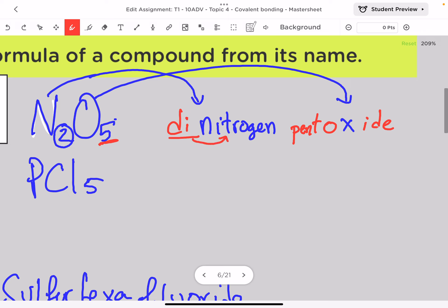The prefix di is attached to the name nitrogen, designating that I have two nitrogen atoms in this molecule, and the prefix penta is attached to the oxide, meaning that I have five oxygen in this compound.